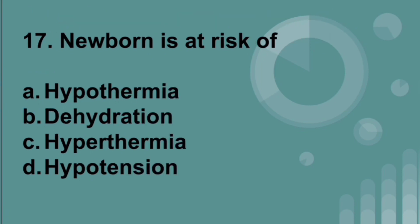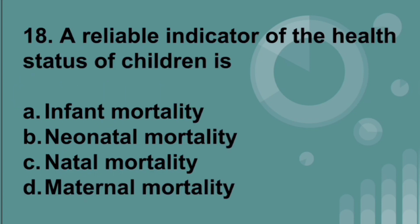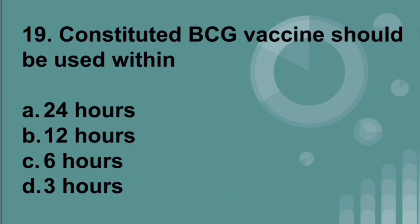A newborn is at risk of hypothermia. A reliable indicator of the health status of children is infant mortality. Reconstituted BCG vaccine should be used within six hours.